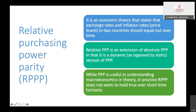Now we go into the detailed explanation of purchasing power parity and its drawbacks. Relative purchasing power parity is a different type. Relative purchasing power parity is an economic theory stating that exchange rates and inflation rates in two countries should equalize over time. It is an extension of absolute purchasing power parity in that it is dynamic.